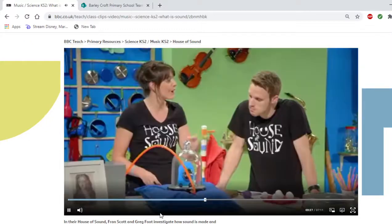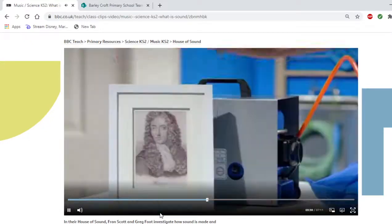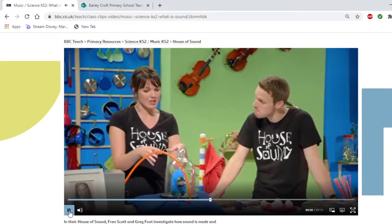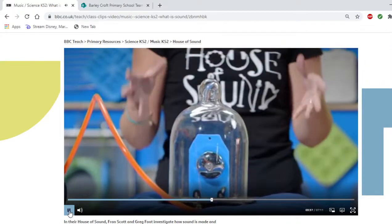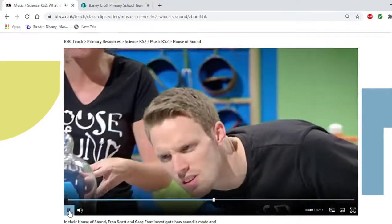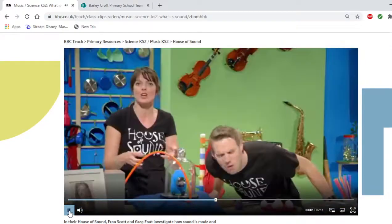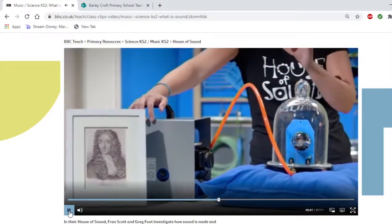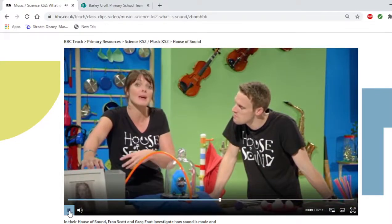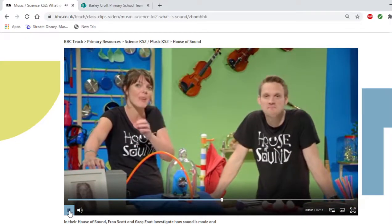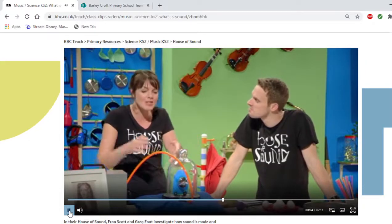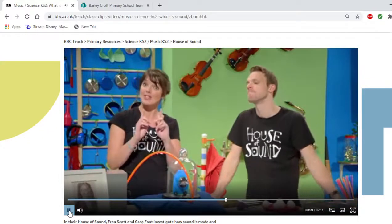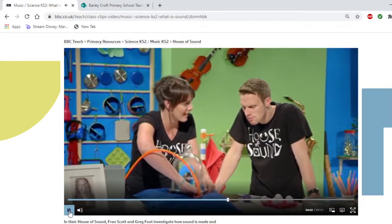This is an experiment that was first carried out hundreds of years ago, made famous by this scientist, Robert Boyle. Oh, nice hair. Believe it or not, in this big jar there is an electric bell ringing, but we can't hear it because we've taken out almost all of the air out of the jar using this machine here called a vacuum pump. Now it's called a vacuum pump because it pumps out the air to make a vacuum. And a vacuum is what we call a space where there is no air. And because there is no air for the sound waves to travel through, we can't hear the bell until I remove this pipe and let the air back in.